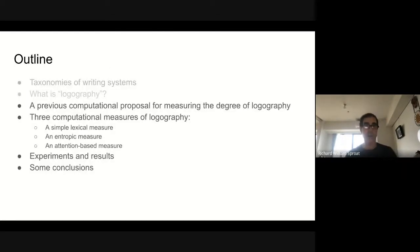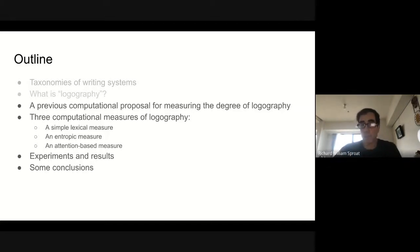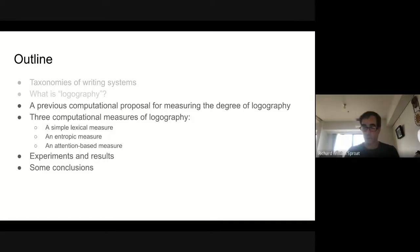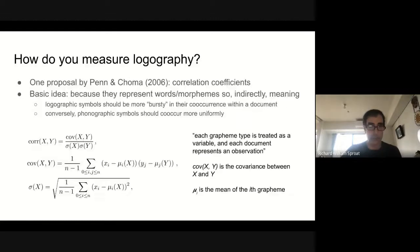To give an outline of the rest of the talk: I've already talked about taxonomies of writing systems and some notions of logography. I'll talk about one previous computational proposal for measuring the degree of logography, because logography is not a categorical distinction — it's more a matter of degree — and that begs the question of how you measure it. I'm then going to propose three computational measures, report on some experiments and results, and end with some conclusions.